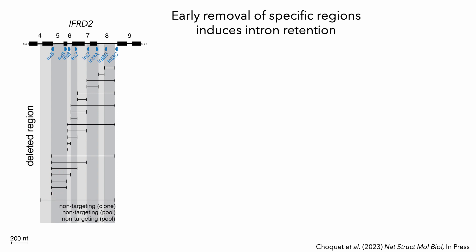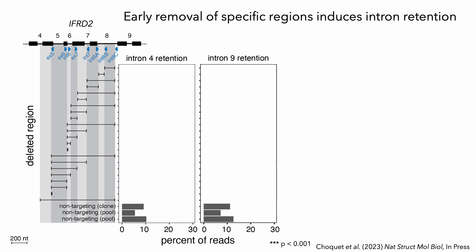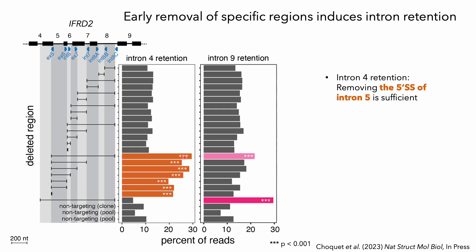For each of these deletions, we extracted nascent RNA, performed nanopore sequencing, and then computed the levels of introns 4 or 9 retention. Interestingly, we identified a subset of deletions that led to significantly increased intron 4 retention. As we made these deletions smaller and smaller, we were able to pinpoint the exact seven nucleotides located near the 5-prime splice site of intron 5, which when deleted are sufficient to induce not only intron 4 retention, but also retention of introns 2 and 3. This further emphasizes the coordinated nature of splicing, and indicates that if intron 5 is removed too early prior to removal of intron 4, this has negative consequences for splicing throughout the transcript.